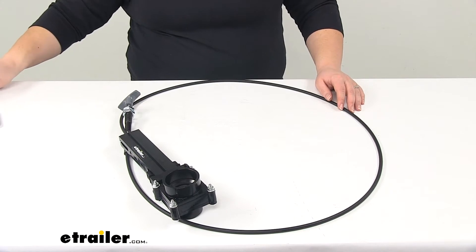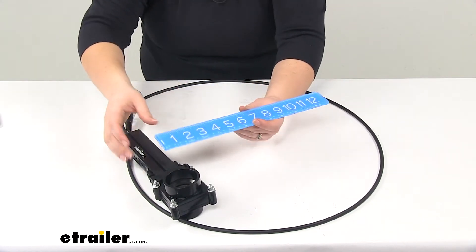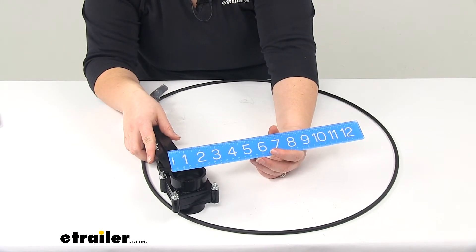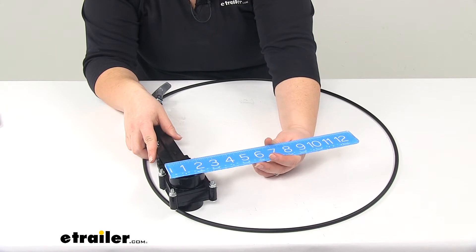Now as far as our diameters, again, our larger opening, that's going to be the hub side. The inner diameter is going to be one and seven eighths of an inch. The outer diameter is going to be two and a quarter.